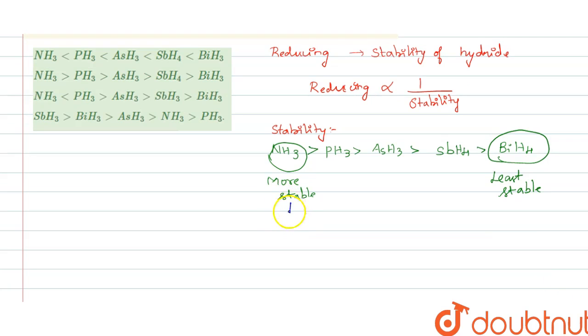In case of reducing nature, when coming to reducing nature, the ammonia has less reducing power when compared to BiH3. BiH3 has more reducing nature.